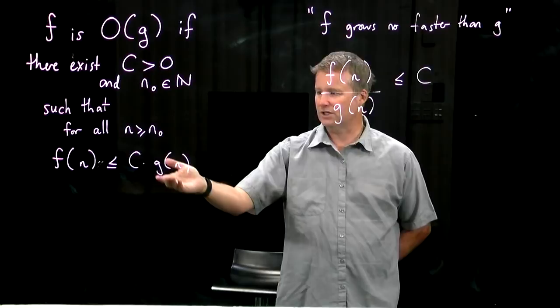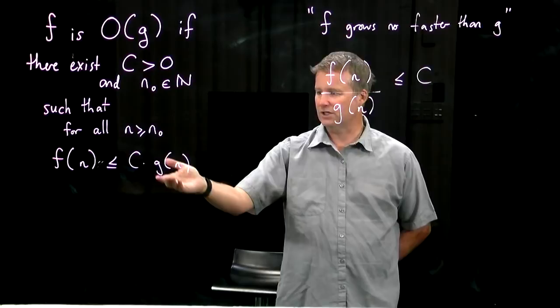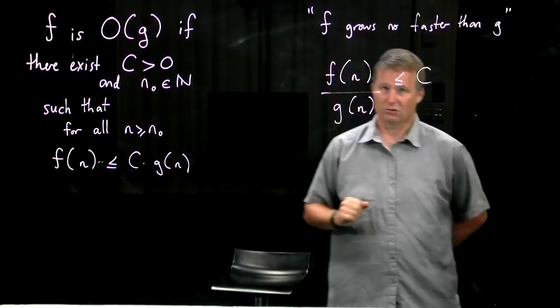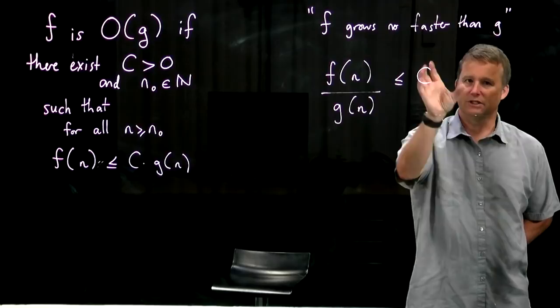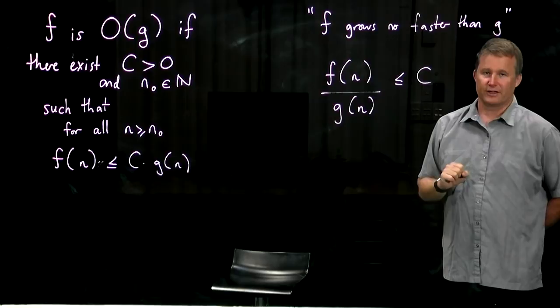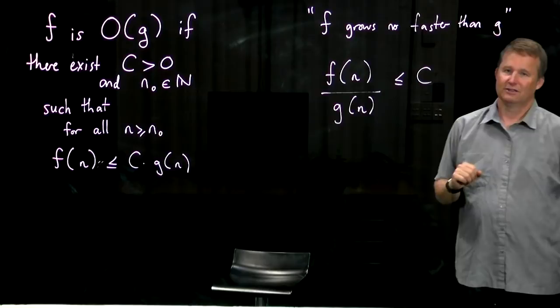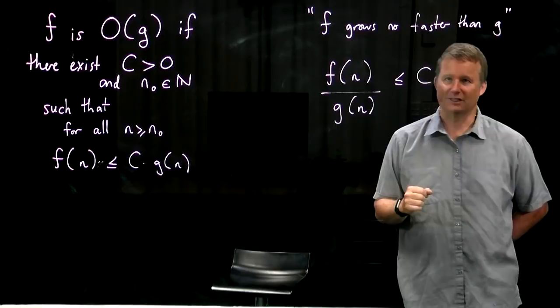The reason why I didn't write it like this is that sometimes you have examples where g of n is equal to 0 for some n and you have to write it like that — that's the only real reason. Basically, we're saying the ratio is bounded. That's what it means to say that f doesn't grow faster than g. This constant might be, say, 10, so f might be bigger than g for all values of n, but it's not outpacing it to infinity in some sense.